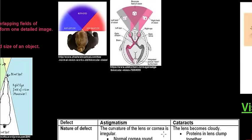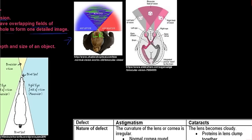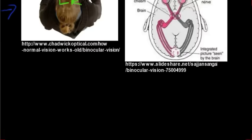We will now move on to binocular vision and its importance. Binocular vision, also known as stereoscopic vision, is when two forward-facing eyes have overlapping fields of view, and those fields combine to form one detailed image. Looking at a diagram, the right eye has a field of vision and the left eye has a field of vision, and somewhere in the middle those two combine to give one detailed image.